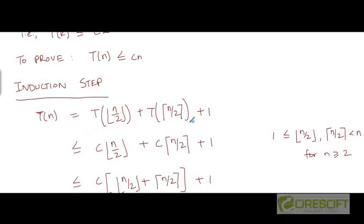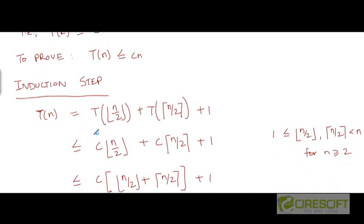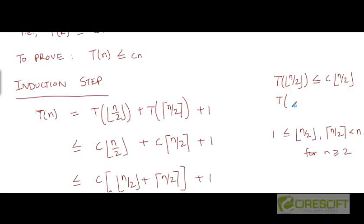Now we can apply the induction hypothesis to substitute these two terms by their corresponding right hand sides in the claim. So we can use the induction hypothesis to assume that T of the floor of n by 2 is less than or equal to C times the floor of n by 2, and that T of the ceiling of n by 2 is less than or equal to C times the ceiling of n by 2.